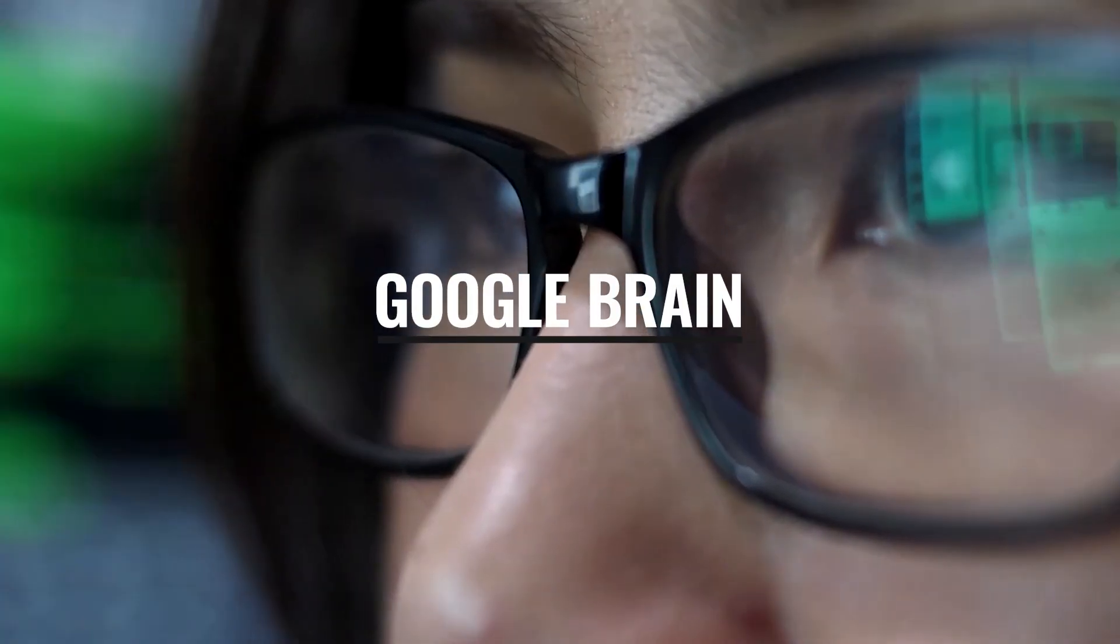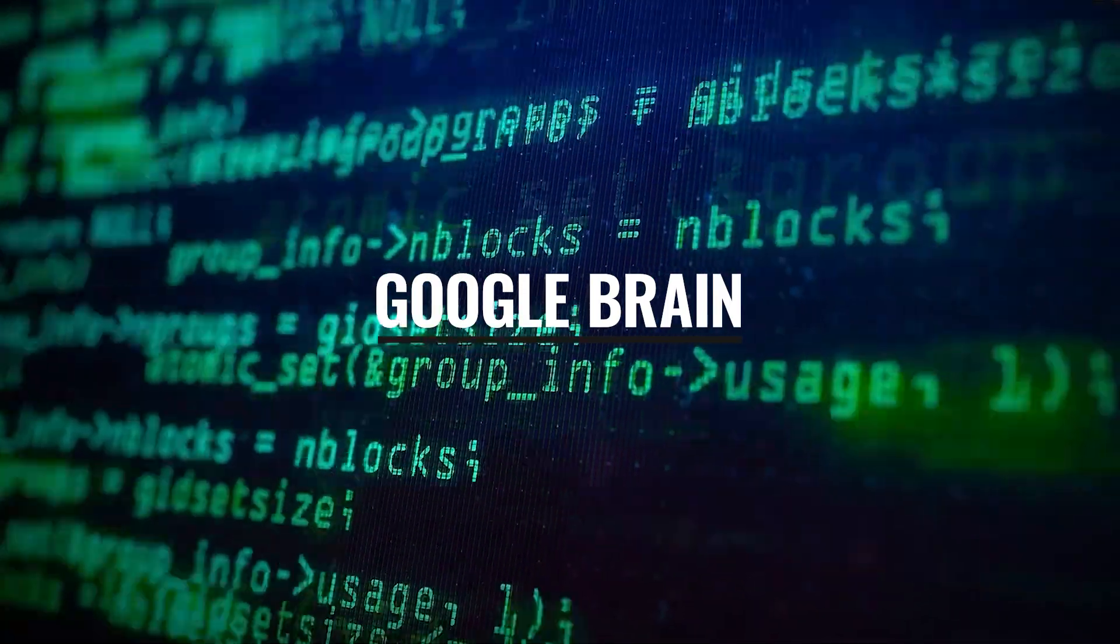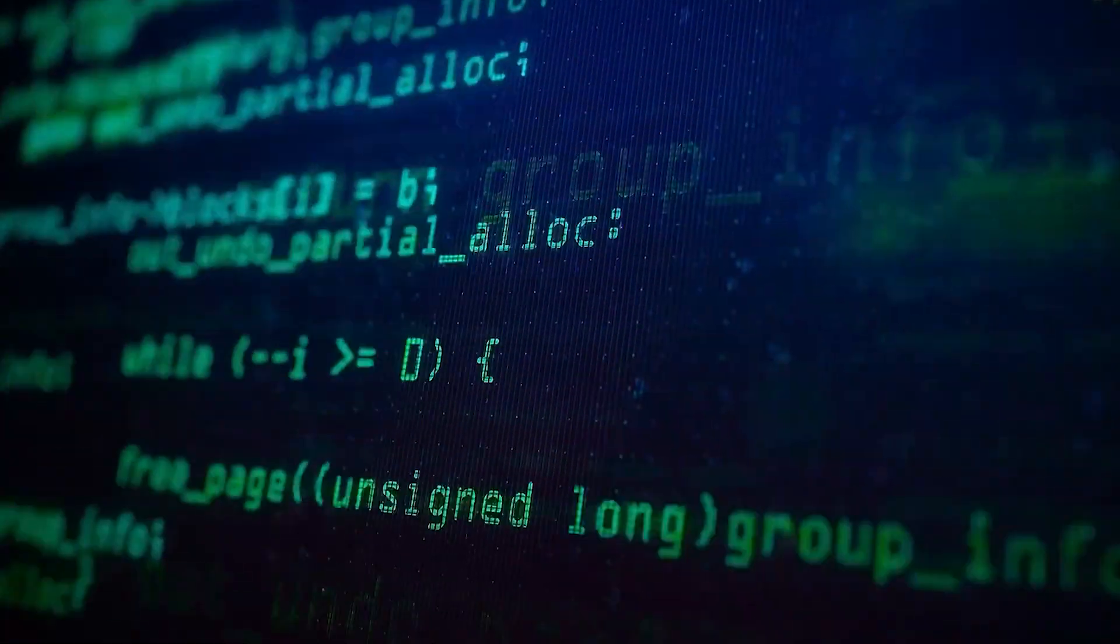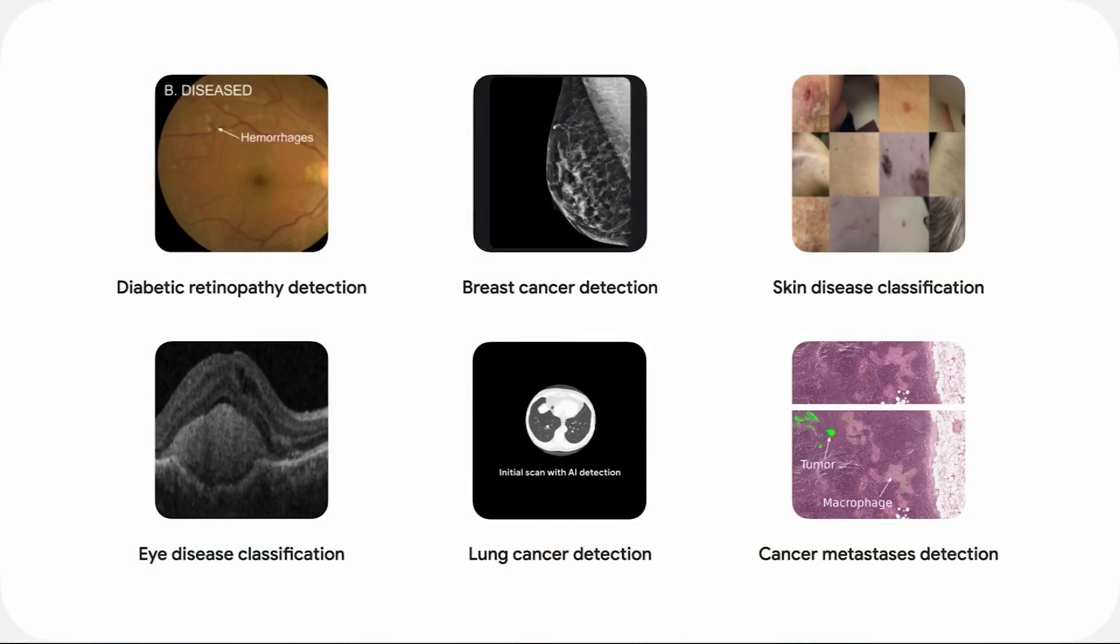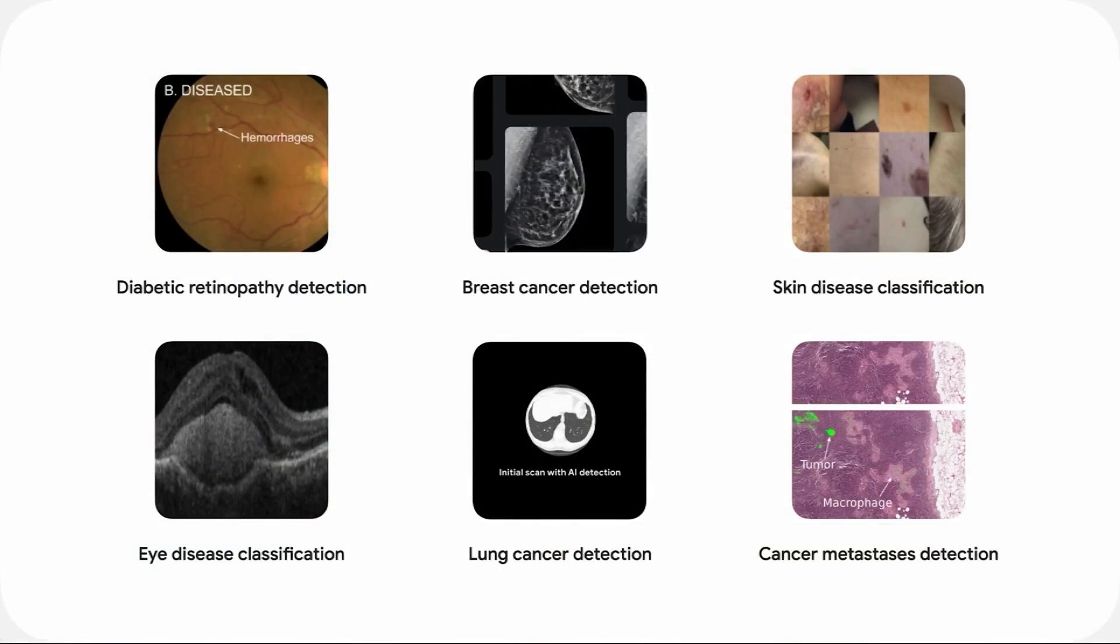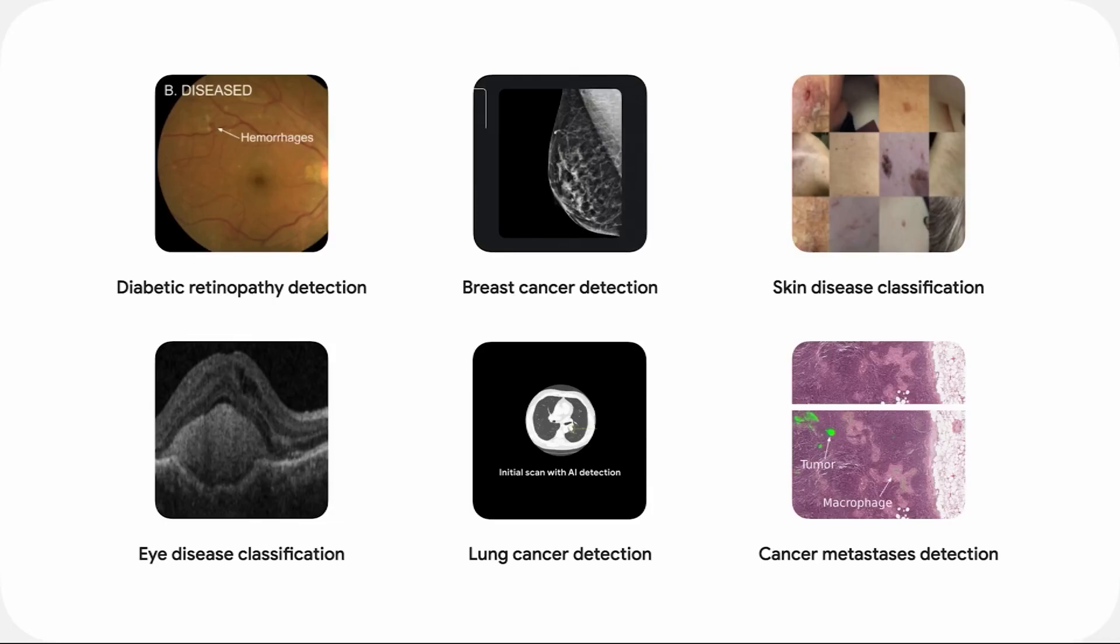Google Brain is a team of researchers that focuses on fundamental and applied research on AI and machine learning. They have made significant breakthroughs in medical imaging, genomics, and drug discovery, and their contributions have helped advance healthcare and medicine.